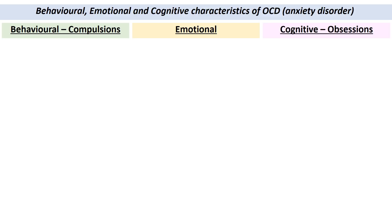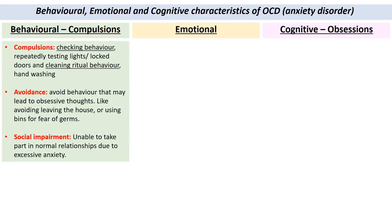For the behavioural characteristics, the defining feature of OCD is the compulsions. Generally we have two categories. One is checking behaviour — testing that lights are on or off, checking the door is properly locked, or checking the gas has been turned off. Another common compulsion is cleaning ritual behaviour — cleaning the kitchen very thoroughly, or washing hands to an extreme amount, to the point where hands become sore and scabbed. Another common behavioural characteristic is avoidance. If interacting with a bin might trigger an obsessive thought of contagion, you might avoid using the bin. This avoidance may lead to social impairment where you're unable to engage in normal social activities.